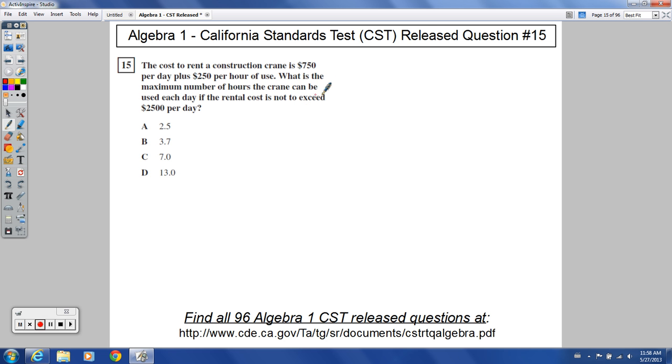Let's give these things some variables. Let's let C equal the total cost per day, C standing for cost. And let's go with H for the number of hours used per day, so H equals the hours used per day.